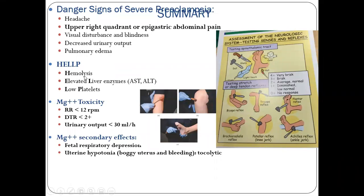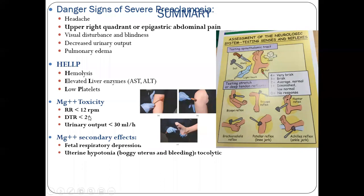HELLP syndrome recap: hemolysis, elevated liver enzymes — AST and ALT — and low platelet count. If a patient has magnesium sulfate toxicity, check the respiratory rate — it should be less than 12 breaths per minute — and DTR (deep tendon reflexes) should be less than 2. All reflexes should go down or be hyperreflexic. Magnesium's secondary effects cause fetal respiratory distress and uterine hypotonia — boggy uterus and bleeding — very important for NCLEX.